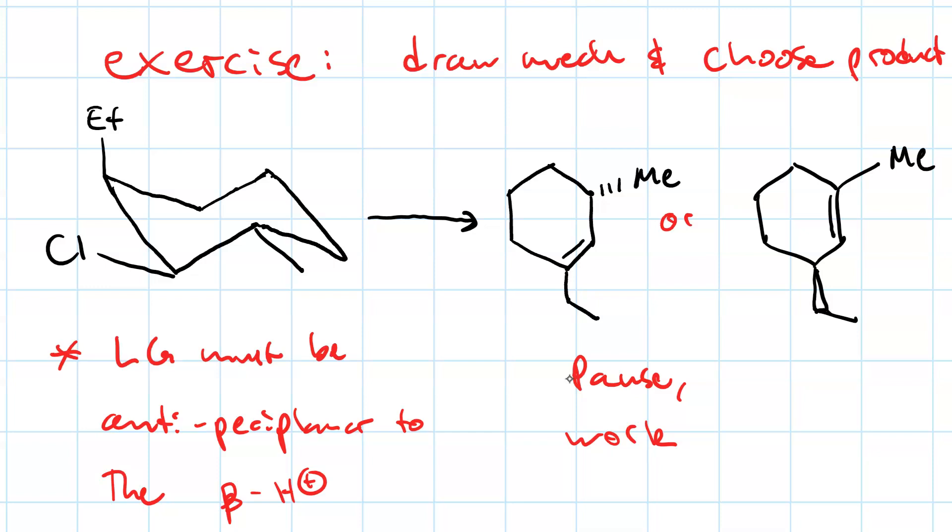So your first step in your mechanism should be a ring flip. The second step should be proton transfer and loss of leaving group. And then choose which product you get. Once you've done that, resume your video.